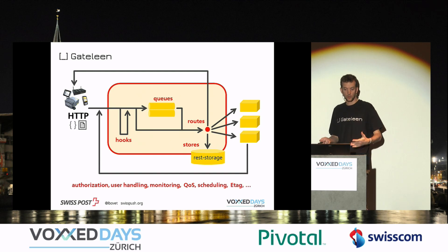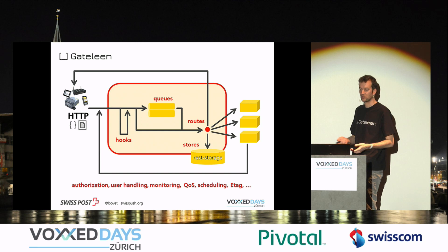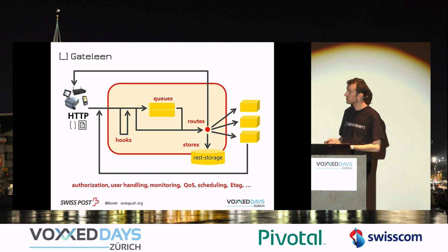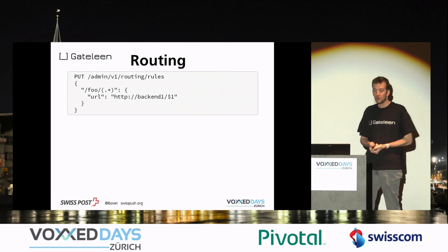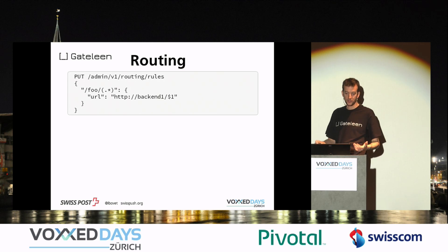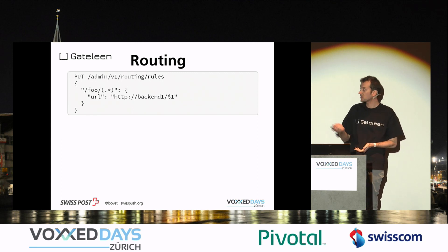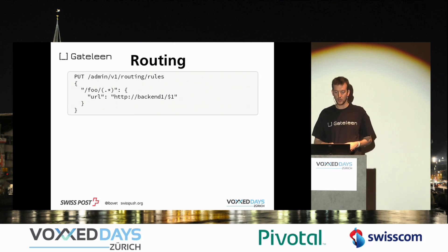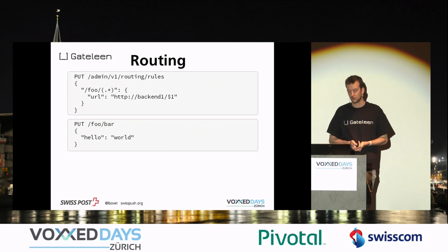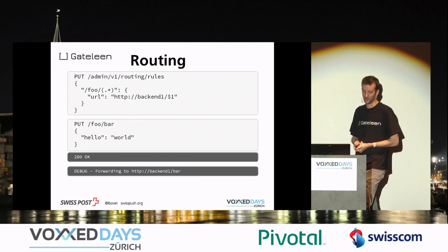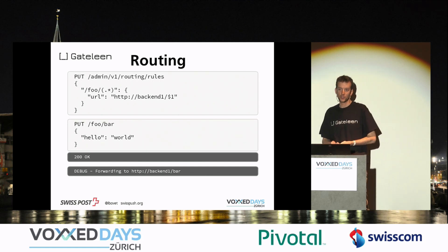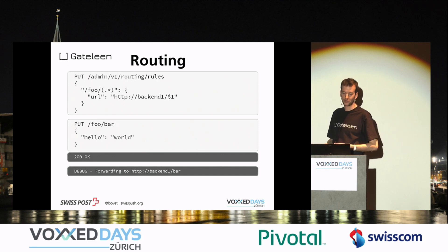We also have quite a bunch of other features for enterprise-grade production. I will focus here on the four main features. In Gateline, we configure everything just using REST APIs. You have administration endpoints, and you put this kind of configuration to create a route from a given URL pattern to a given backend. If I put a resource on the foo/bar path, it works, and I can prove that it has been routed by looking in the log file of Gateline to confirm it was forwarded. This is like rewrite rules in a reverse proxy — quite standard.